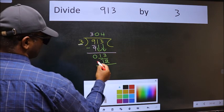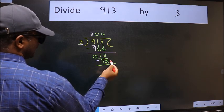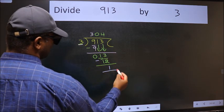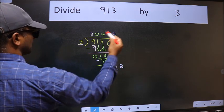Now we should subtract. We get 1. No more numbers to bring down, so we stop here. This is our remainder and this is our quotient.